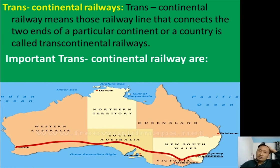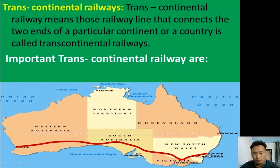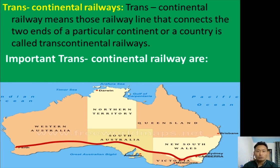Just as we learned about highways in roadways, we are now going to learn about transcontinental railways. Transcontinental railways are those railway lines that connect two endpoints of a particular continent or country. Looking at the map of Australia, a red railway line connects one end of Australia to another — such long-distance railway lines are called transcontinental railways.